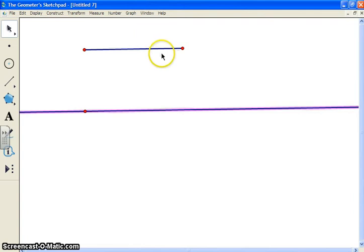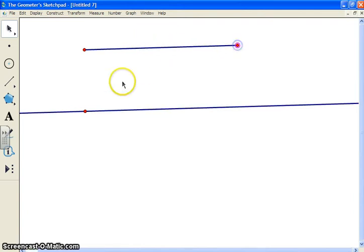So now we've got our two parallel lines, one of them being this segment, one of them being this line down here, and we can construct our transversal.